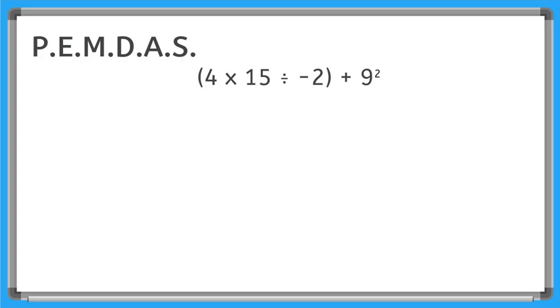All right now here's our next one. This one is a little bit more challenging. We do have parentheses and an exponent in this problem. So first things first, P for parentheses. That means we have to do everything that is inside of the parentheses before we can do anything else. So here we have a set of parentheses. Within that we have 4 times 15 divided by negative 2.